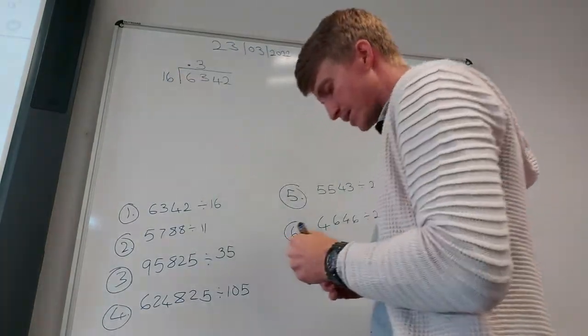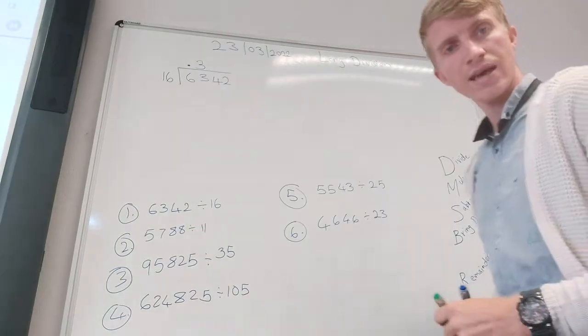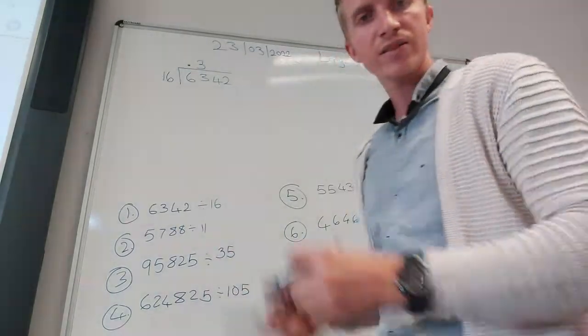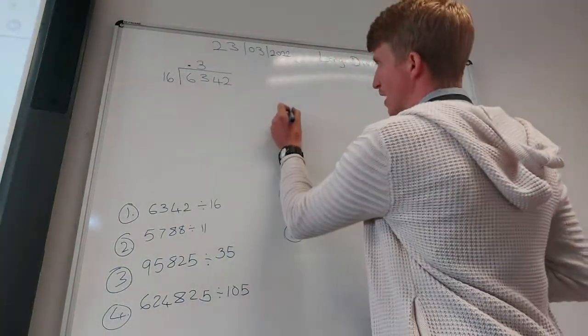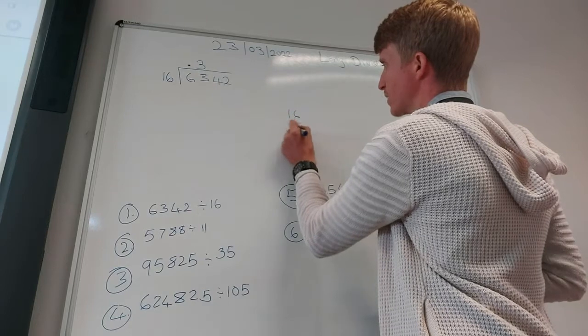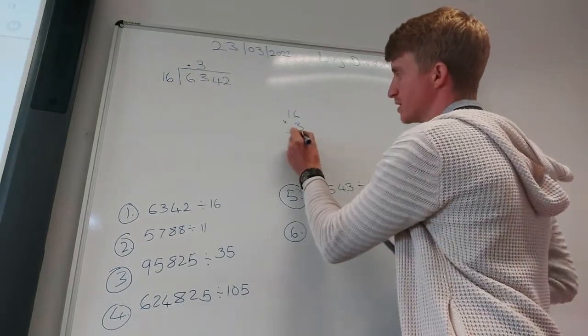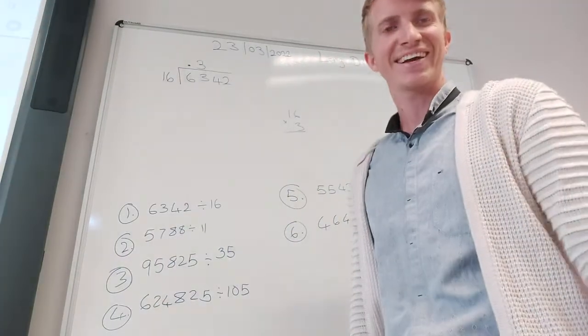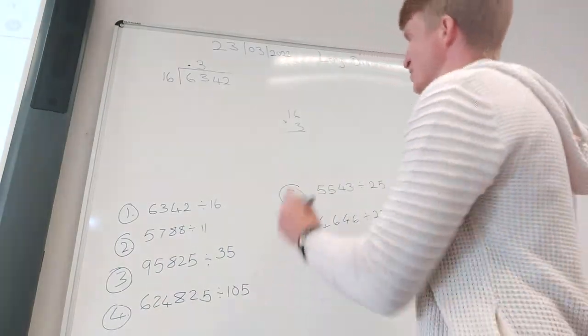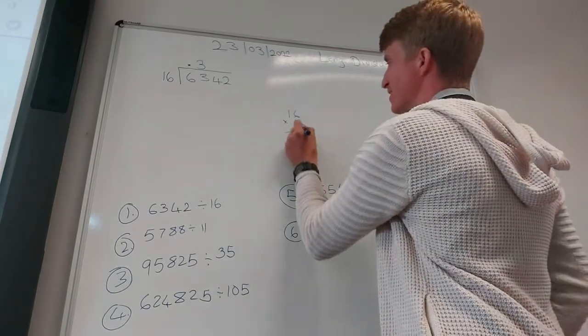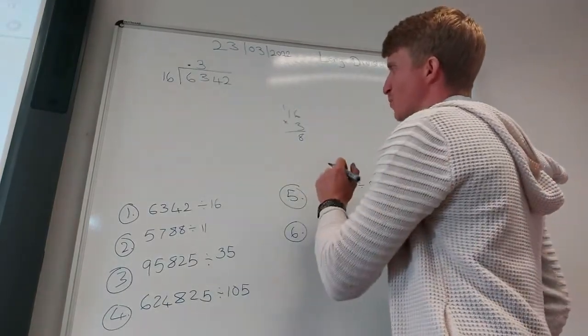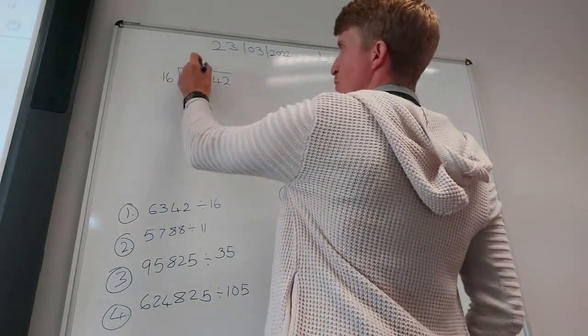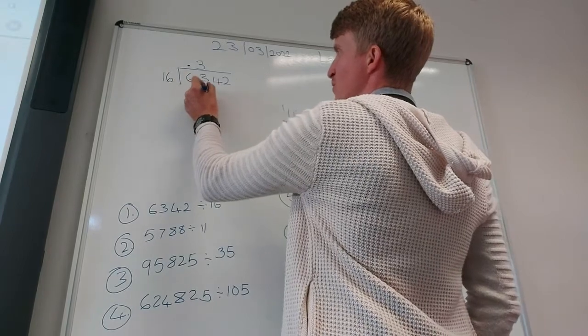And then my next step, my next rule is the M for multiply. So 16 times 3. On the side you can do a quick long multiplication here. 3 times 6 equals 18. 3 times 1 equals 3 plus that 1 is 4. So it's 48. 3 times 16 equals 48.